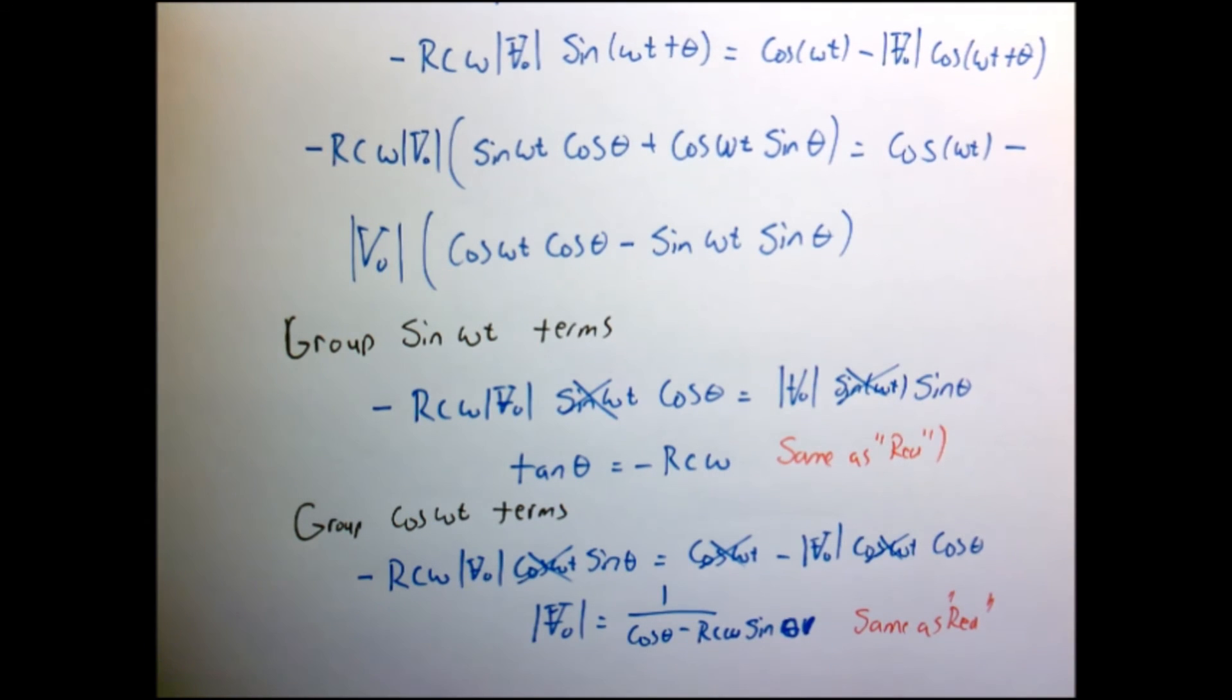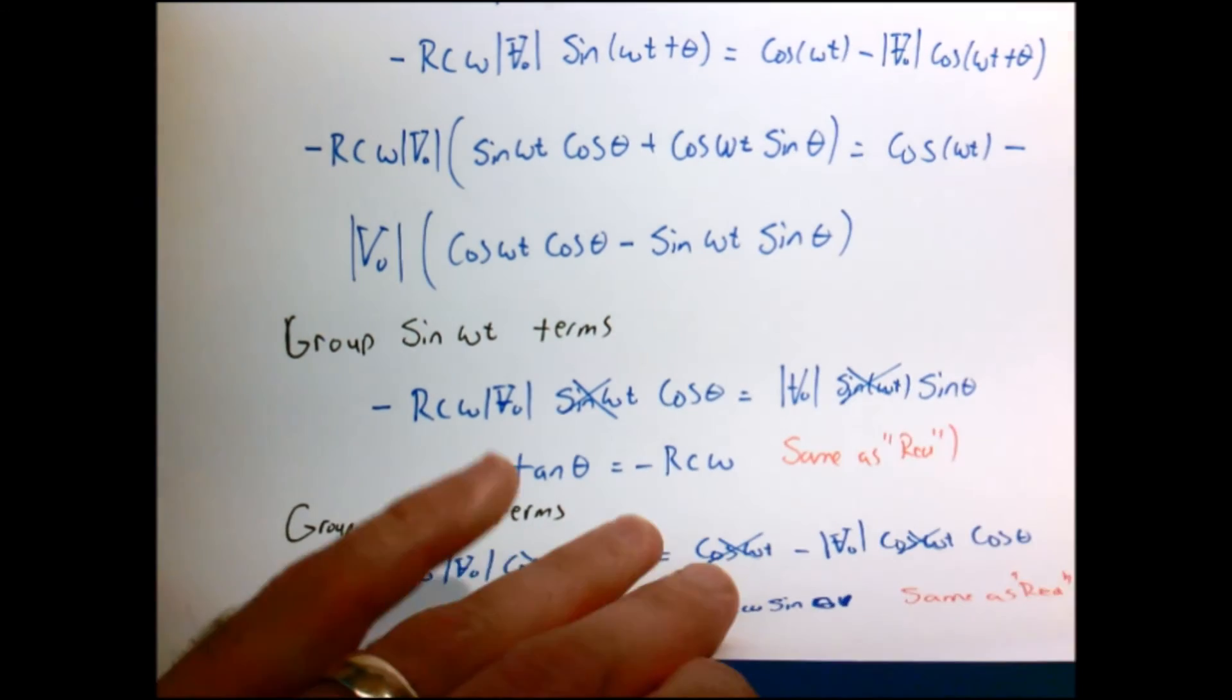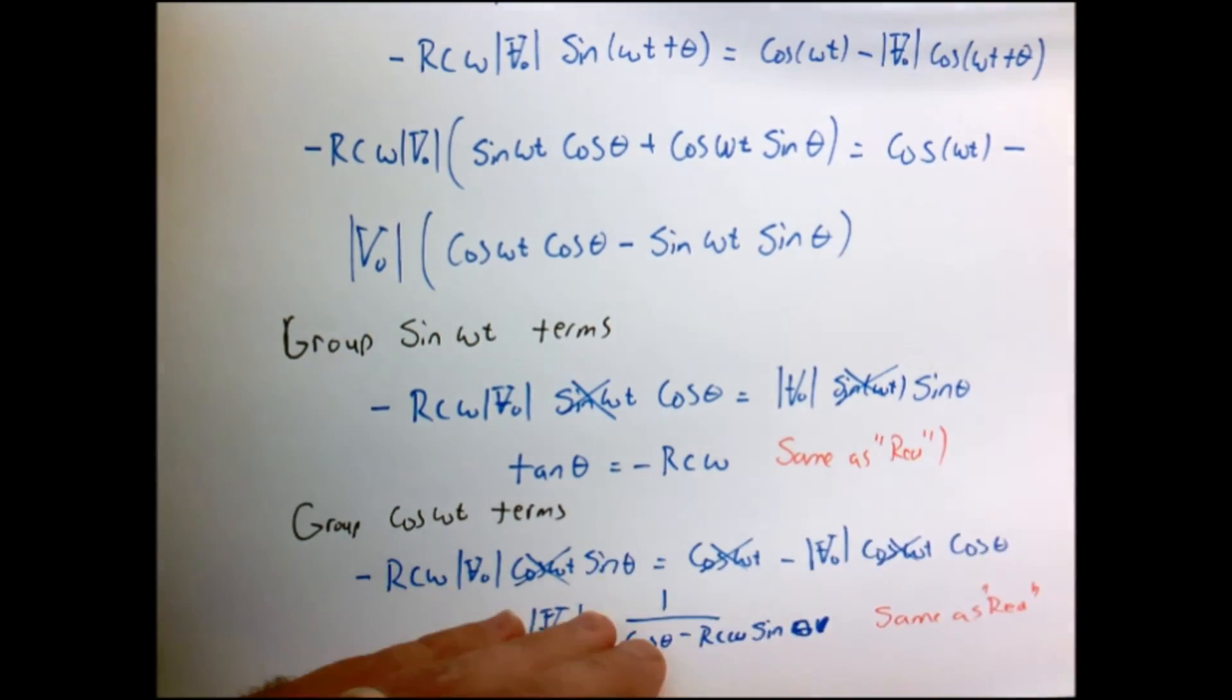So this is really cool, right? Because now I've hopefully shown that the solution for sine of omega t is absolutely the same as for cosine of omega t, something that you probably could have guessed already.